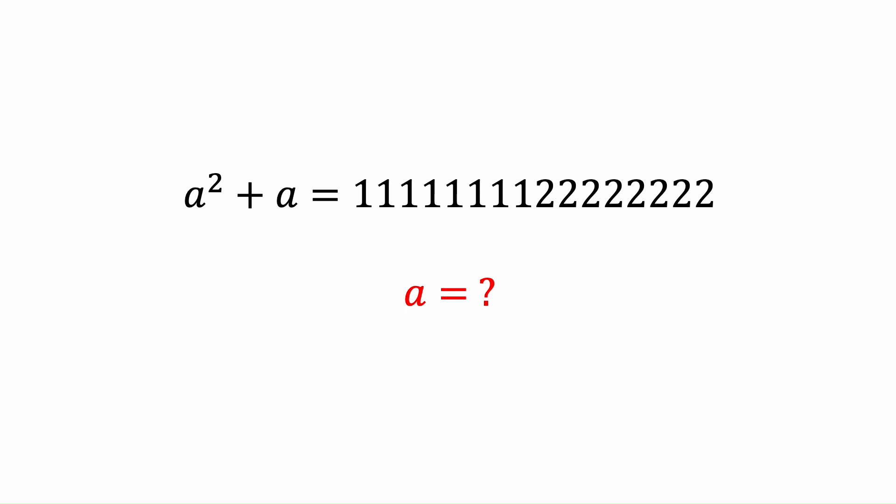Hello everyone! In this video we want to solve this equation together in a more creative way. This is a quadratic equation which you can solve in a traditional way, but the number that we have here is too large and makes the calculation more complicated. What we can see here is that this number has a specific structure — it contains eight ones and eight twos. So in this solution we want to write this number in a simpler way to solve this equation much more simply.